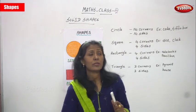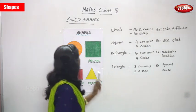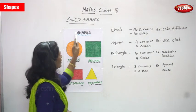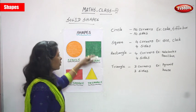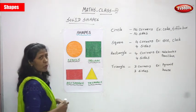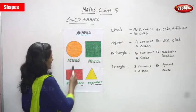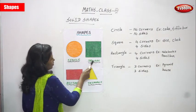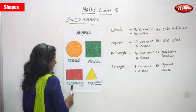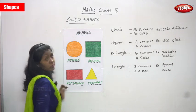Hi, welcome you all. In today's class we are going to see solid shapes. Now we are going to see some important shapes. One is circle, another one is square, another one is rectangle, and another one is triangle.